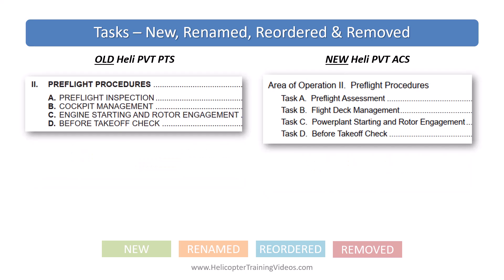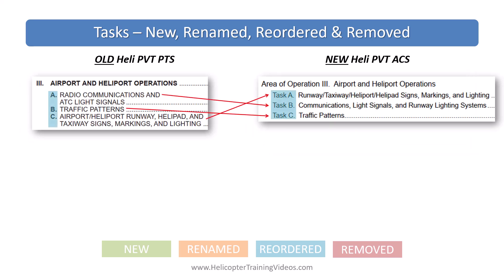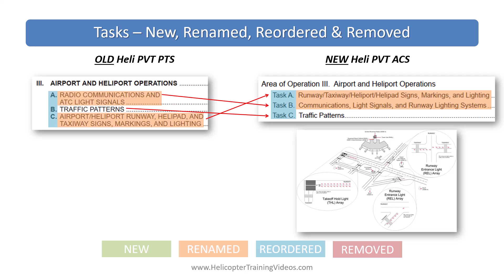Under pre-flight procedures, pre-flight inspection became pre-flight assessment, cockpit management became flight deck management, and engine starting and rotor engagement became power plant starting and rotor engagement. The reason for changing from engine to power plant is likely to future-proof the ACS for different types of propulsion as we switch from engines to electrical power plants. There is also the addition of runway lighting systems to the communication task, covering things like runway entrance lights and takeoff hold light systems, which provide signals to control aircraft crossing runways or give information to aircraft in position for takeoff.